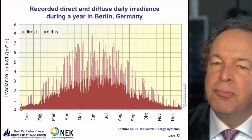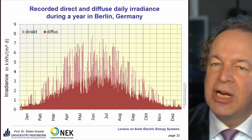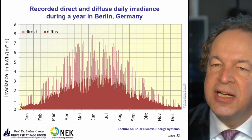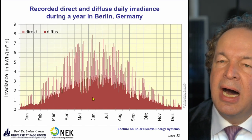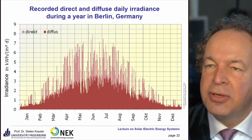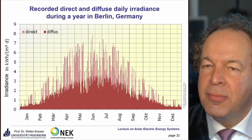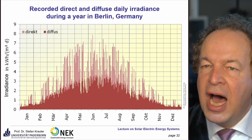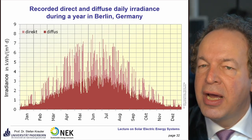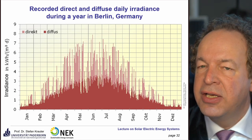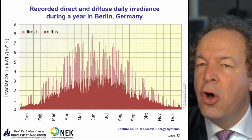The critical issue is the lowest irradiance levels, which fall below half a kilowatt-hour per square meter per day — not just for a single day but for several consecutive days. This makes 100% solar power supply in Germany rather difficult; you either need to significantly overdimension your PV generator for winter supply or consider seasonal storage.